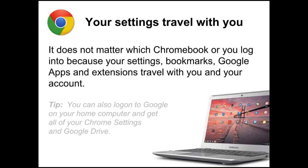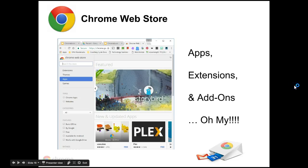The best thing about the Chromebook is that your settings travel with you — it doesn't matter which Chromebook you're on or which one you log into, because your settings, bookmarks, apps, and extensions all go with your account since everything is stored in the cloud. The Chrome Web Store is where you go to access apps, extensions, and add-ons. Anything not in your app launcher that you'd like to have, you just go to the Chrome Web Store — you can get there by Googling it, then type what you're looking for and choose to install.